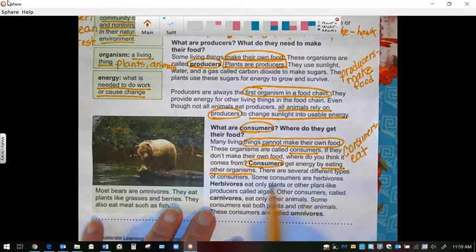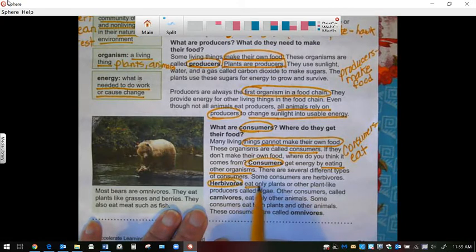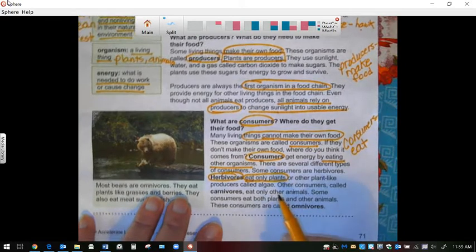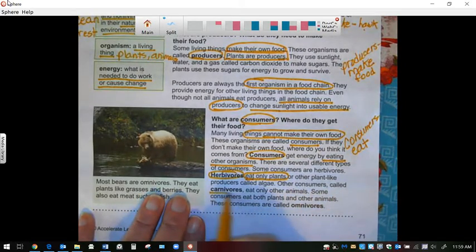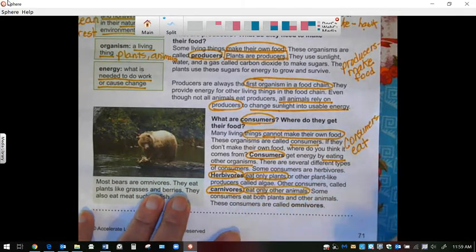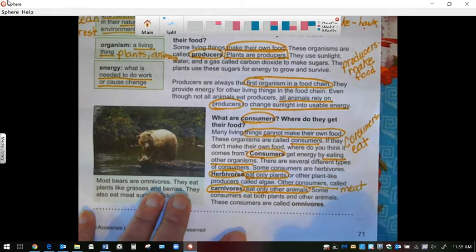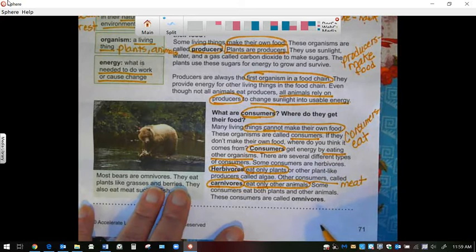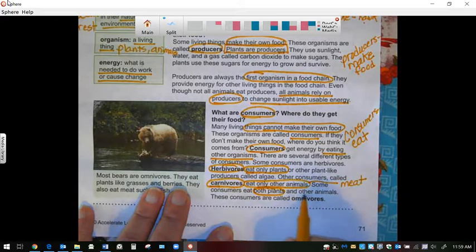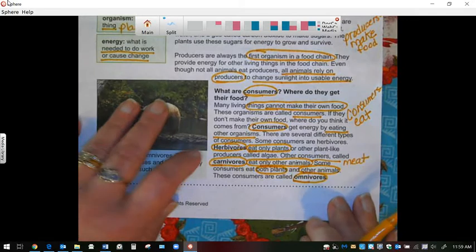There are several different types of consumers. There are herbivores and they eat only plants or other plant-like producers called algae. And other consumers, they're called carnivores, and they eat only other animals. That is meat because that's animals. Some consumers, they eat both plants and other animals. And those are called omnivores.